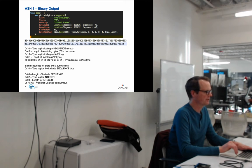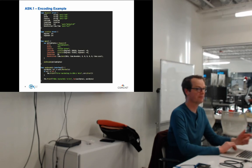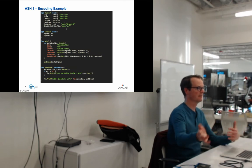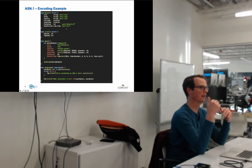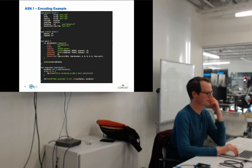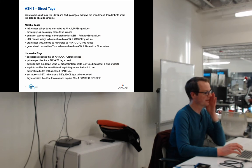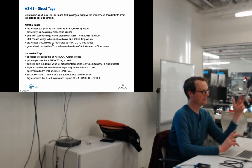Like JSON and XML, ASN.1 has struct tags where we can give hints to the marshaler and unmarshaler. Here are the available struct tags. The 'utc' tag causes the time to be marshaled as an ASN.1 UTC time value, which is very similar to RFC 3339.